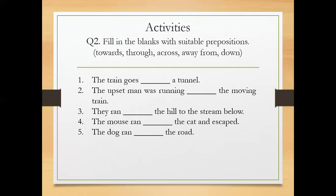The upset man was running towards the moving train. They ran dash the hill to the stream below. So the word 'stream below' shows that we have to use the preposition 'down' over here. They ran down the hill to the stream below. The mouse ran dash the cat and escaped. The mouse ran away from the cat and escaped. The dog ran across the road. Fine.